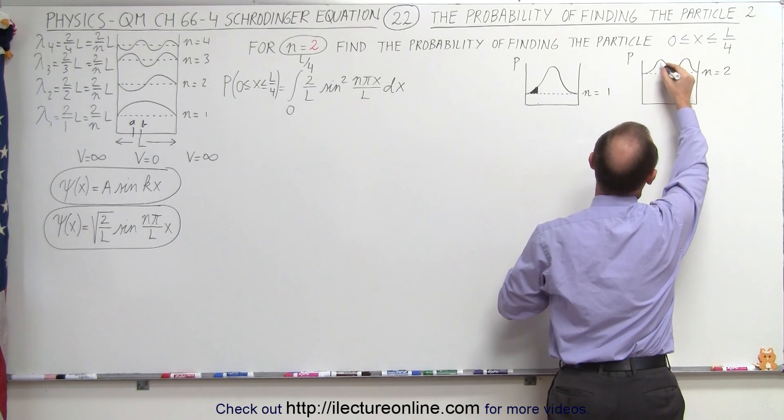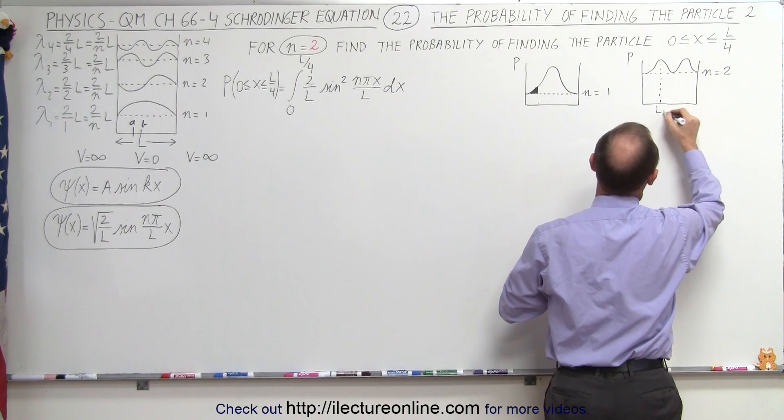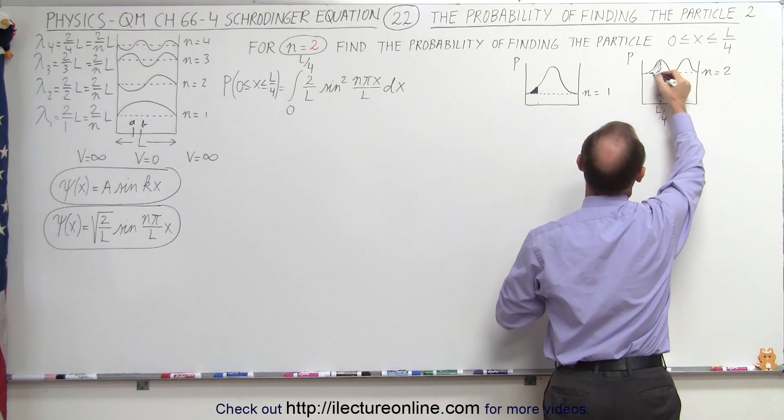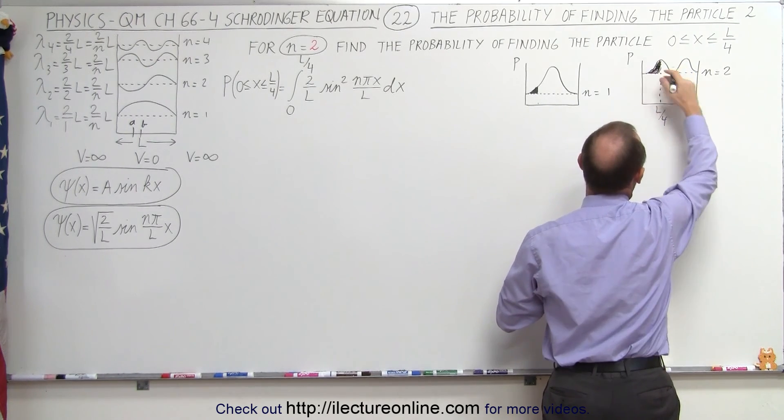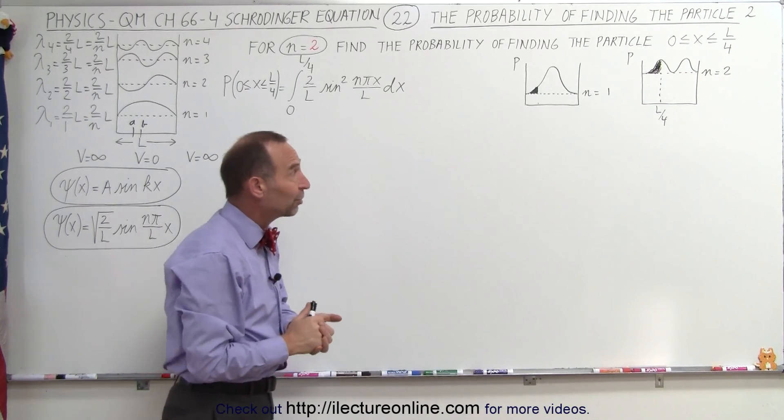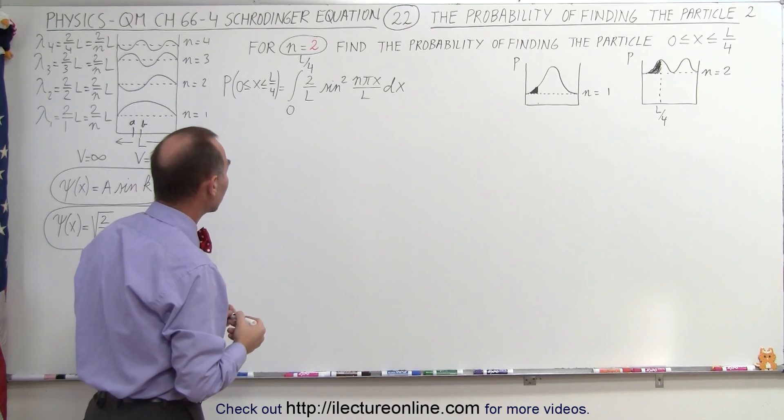If we go one quarter the distance from one side to the other side, this is L over 4, then we find that this should represent the area underneath the curve, and if we then normalize it over the entire curve it looks like that should be about 25%. Now let's calculate it out and see if that's the result we're going to get.